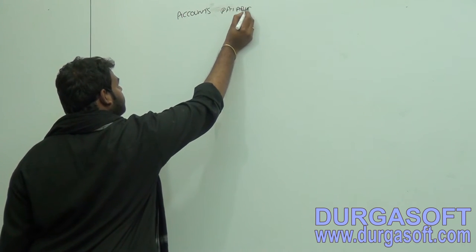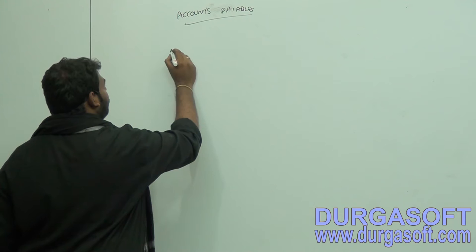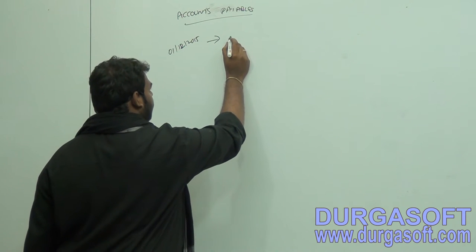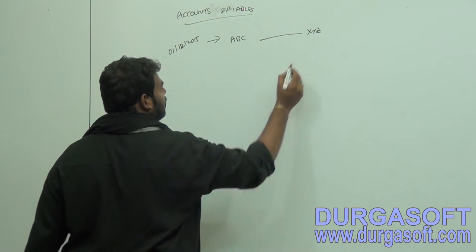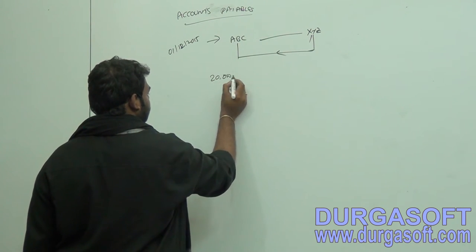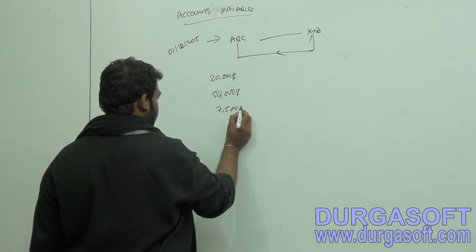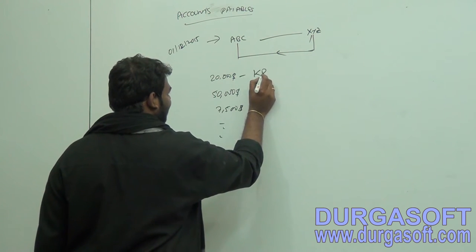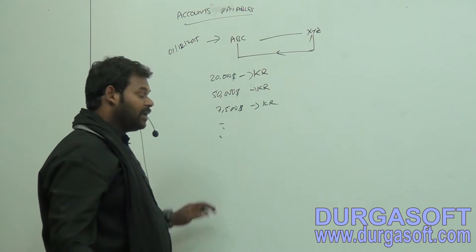The accounts payables: we have made a purchase from the vendor already. For example, we have made a purchase on 01-12-2015 from myself as ABC Chemicals and the vendor is XYZ. We have made purchases from this vendor of $20,000, $50,000, and $7,500. These are shown in the report with the name KR.